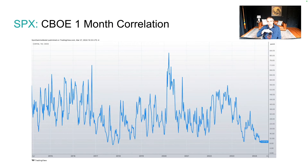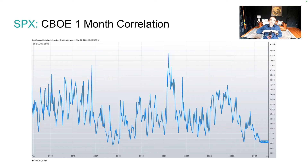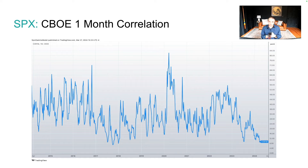On correlation, the CBOE one-month correlation index tells us that not all components of the S&P 500 are moving in the same direction. The S&P itself is generally going up; semis are going crazy while consumer staples maybe not so good. That correlation is unusually low — you have to go back to 2017 to see these levels.